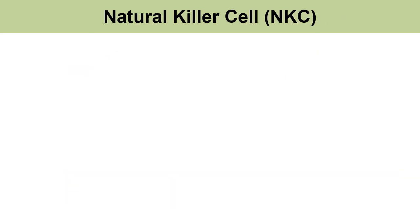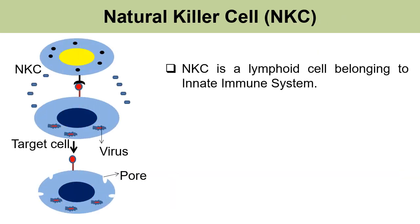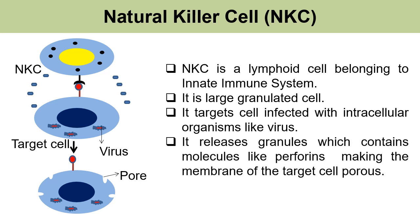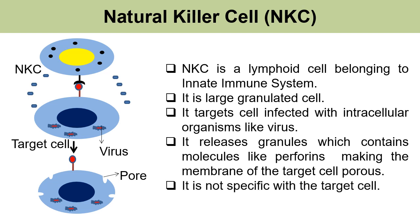Next comes the natural killer cell. The natural killer cell is a lymphoid cell belonging to the innate immune system. It is a large granulated cell that targets cells infected with intracellular organisms like viruses. It releases granules containing molecules like perforins, making the membrane of the target cell porous and causing cytolysis. When it comes to the choice of target cell, it is not specific.